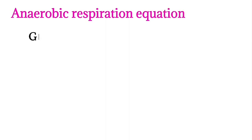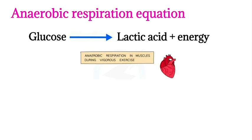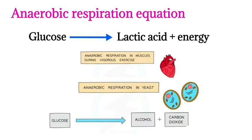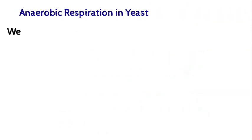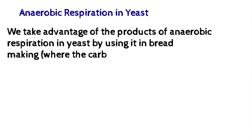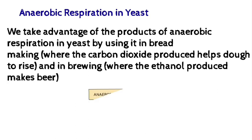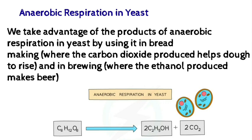The anaerobic respiration equation is: glucose → lactic acid + energy. This happens during vigorous exercise. Anaerobic respiration in yeast converts glucose into alcohol plus carbon dioxide. We take advantage of the products of anaerobic respiration in yeast in bread making, where the carbon dioxide produced helps to raise the dough, and in brewing, where the ethanol produced is used to make beer.